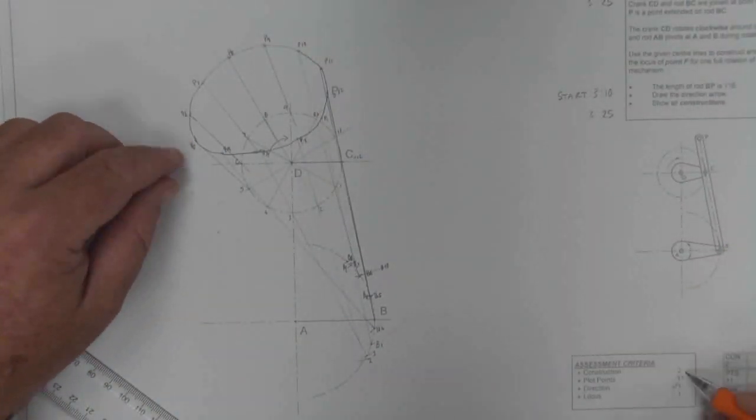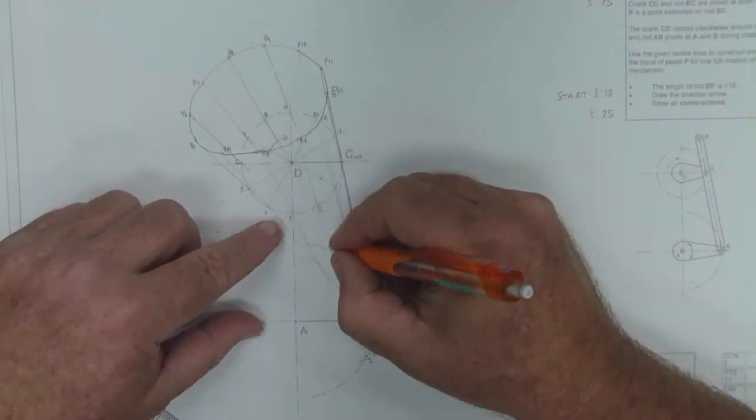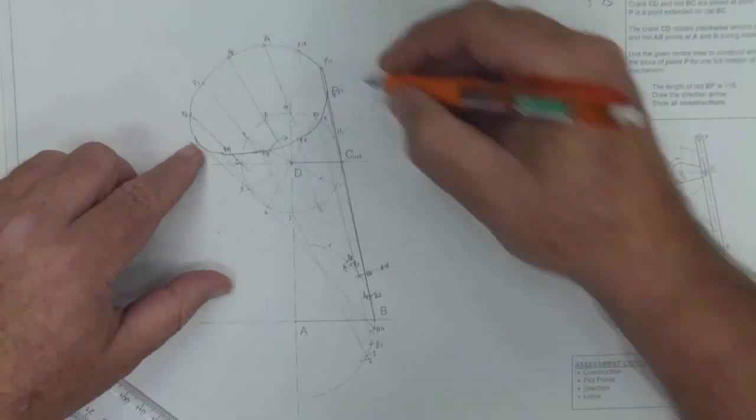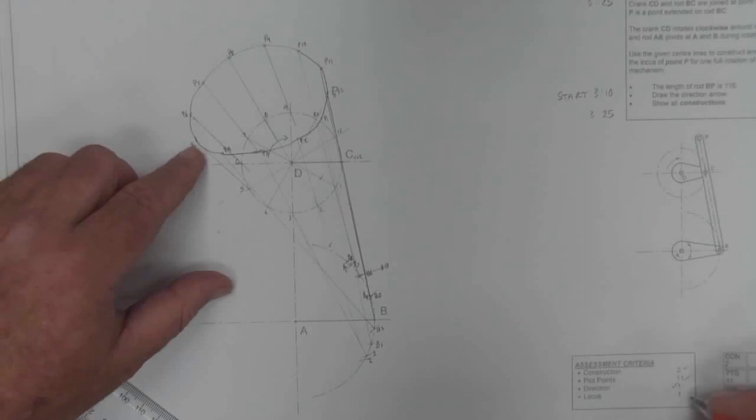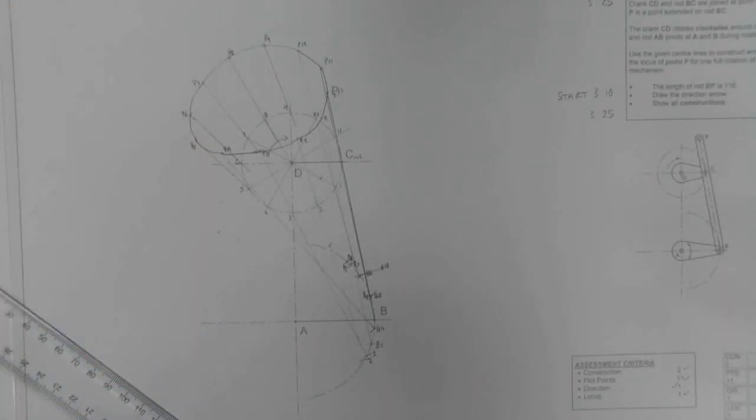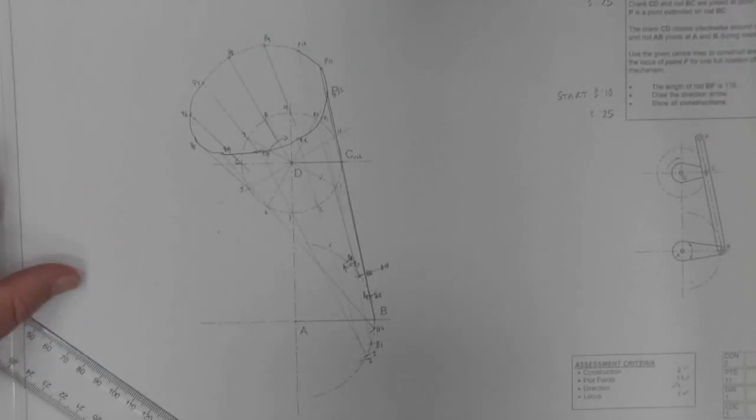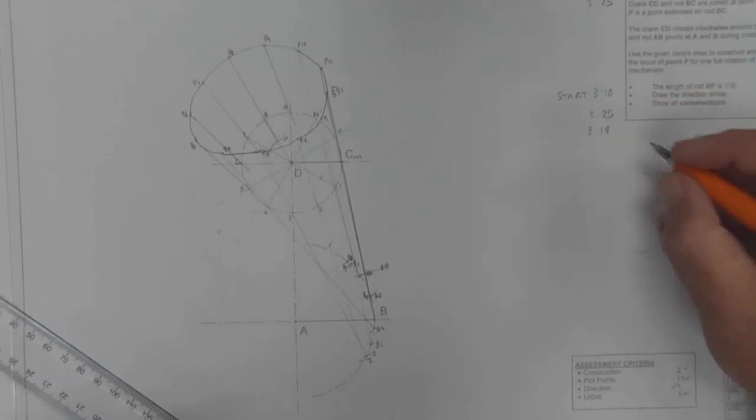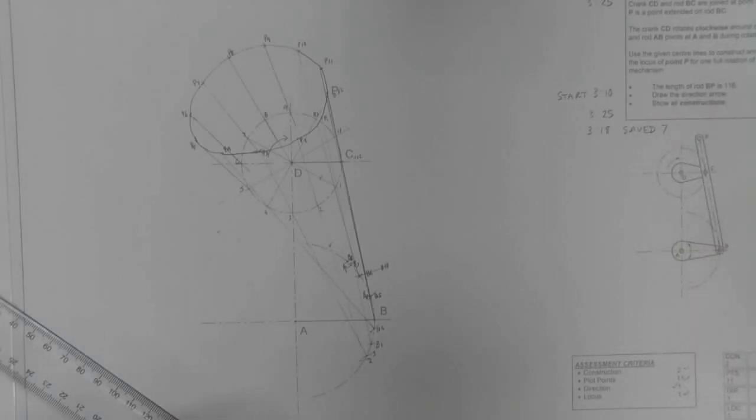So if we just check through things here, construction I've done pizza slices and I've projected to my semicircle so I feel I've done my construction. I've plotted my 11 points and have I drawn my locus, yes. And there is my answer for the 2022 IEB final, the mechanism. My finish time here is 318, so I have saved seven minutes that I can hopefully use in another drawing.